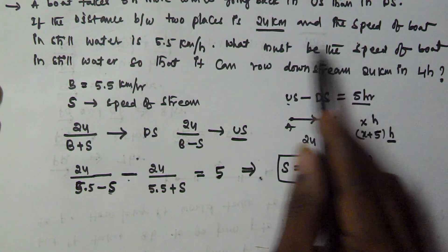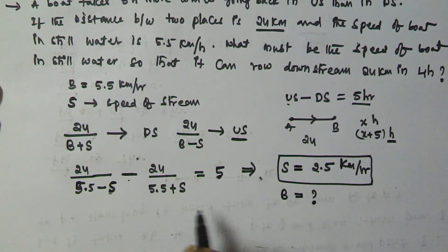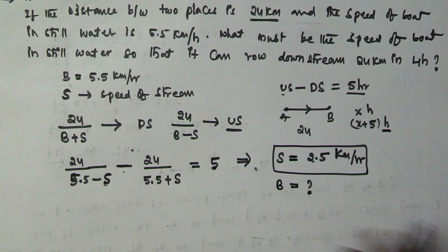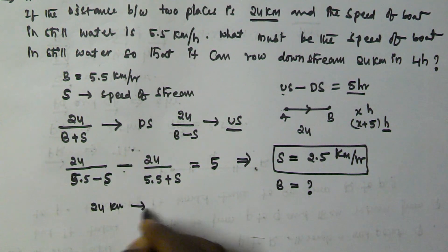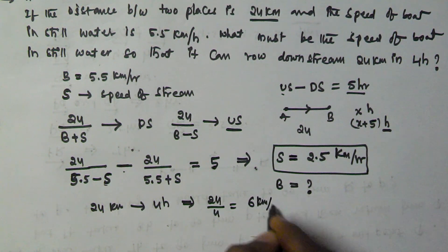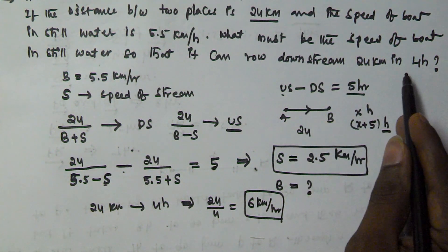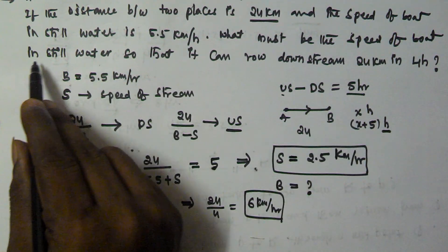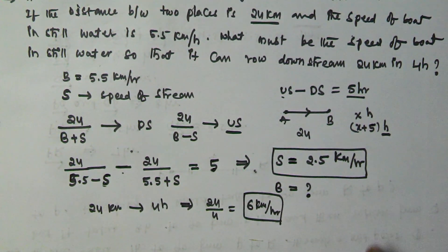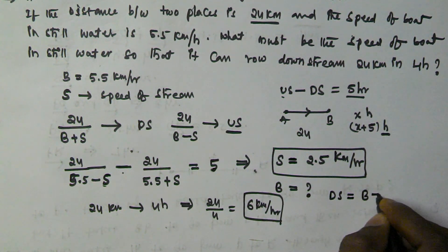It is also given that we have to find the speed of the boat in still water, b, so that it can go downstream 24 kilometers in 4 hours. To travel 24 kilometers in 4 hours, the speed is going to be 24 divided by 4, which is 6 kilometers per hour. This is the downstream speed required. We know the stream speed, we know the downstream speed, and downstream speed equals boat speed in still water plus stream speed.